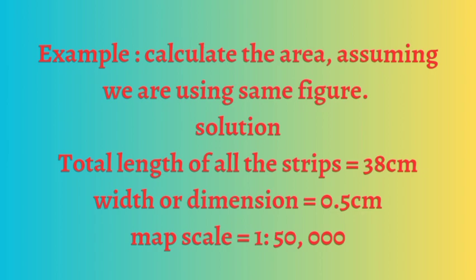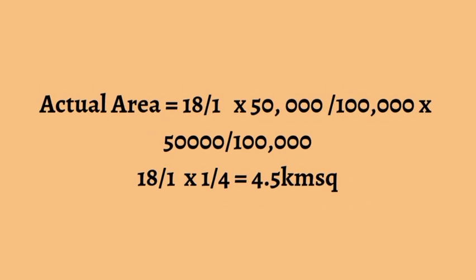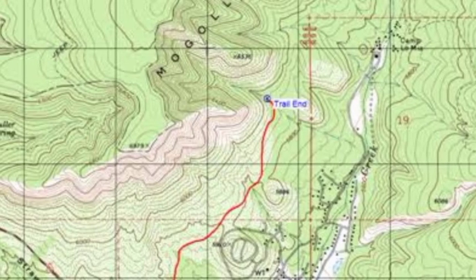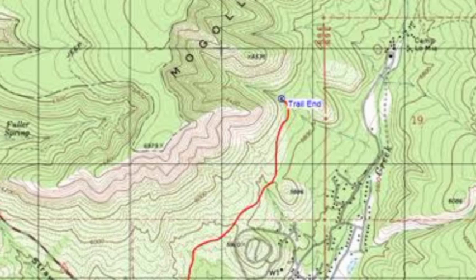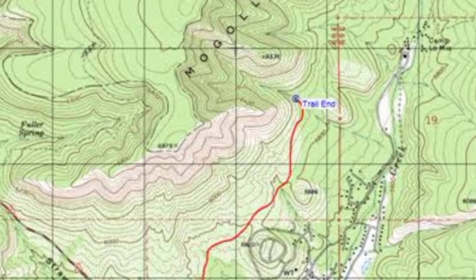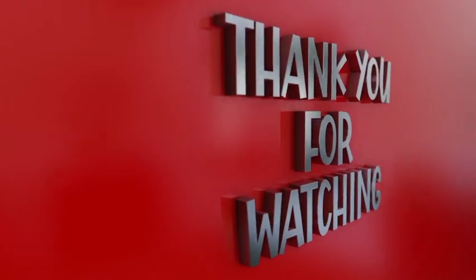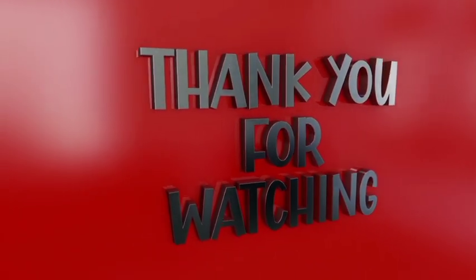We calculate the area using that same figure with the strip method. We get the total length of the strips and also the width of the strips, look at the area being represented, then multiply and divide relating to the scale, and that gives us 4.5 square kilometres. With this we have come to the end of the lesson. Please do well to attempt your quizzes and ask questions if there are any. See you in my next class — bye for now.